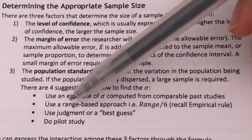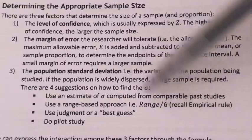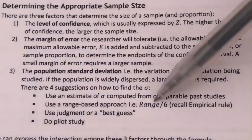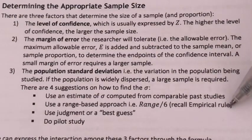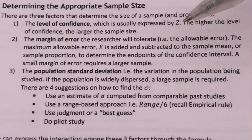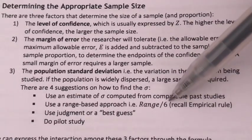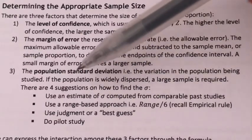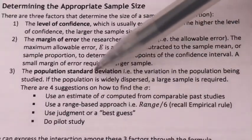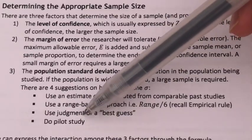The second method is to use a range-based approach, which means we take the range from our sample. Range is the largest value minus the smallest value, and then we divide it by 6. Recall the empirical rule — we are actually dividing our horizontal axis into 6 equal parts: plus minus 1, plus minus 2, and plus minus 3 standard deviations — 3 on the right, 3 on the left, so we get 6. That is why we divide by 6. Or the third way is using a best guess or our judgment.